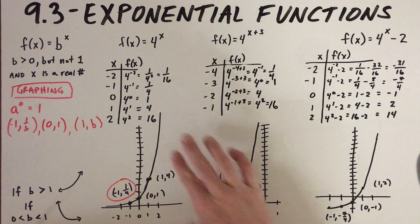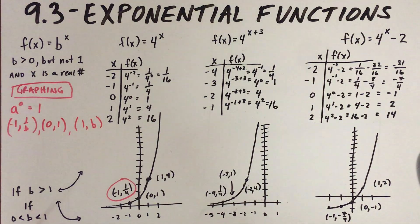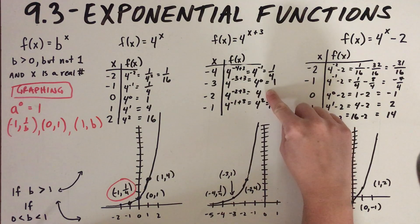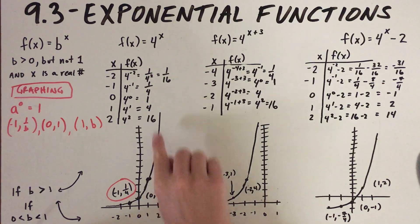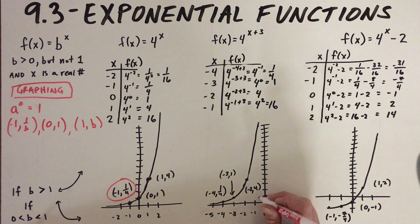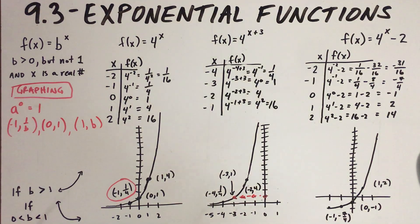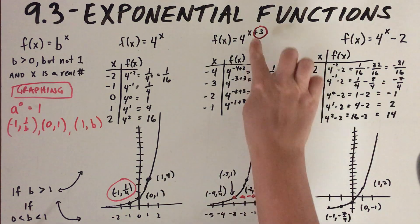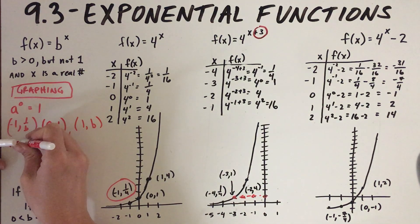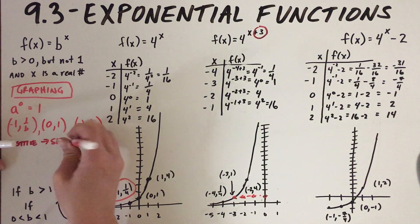Now let's look at what happens when we shift things. Looking at a shifted version — when I plugged in negative four I got 1/4, negative three gave me one, negative two gave four, and negative one gave 16. This is the exact same graph but every single point is shifted. The point (0, 1) has shifted three units to the left. That is what the plus three inside the exponent did — a positive value in the exponent shifts the graph left.